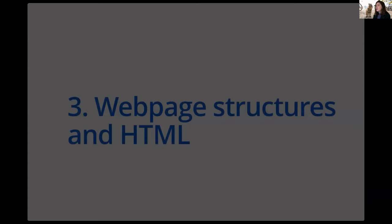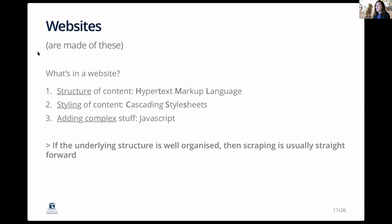Now we can go into webpage structures and HTML. There are three main things that allow you to view information on a webpage. The first is structure, given by HTML — hypertext markup language. The second relates to styling, done through CSS — cascading style sheets. And for more modern websites, you may have complex interactions like clicking a button to reveal content, which is typically done through JavaScript.